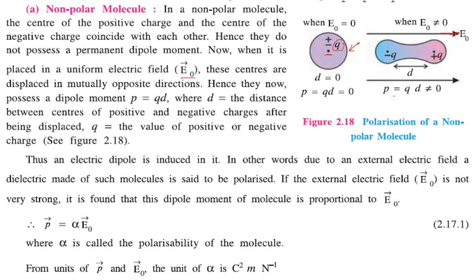When subjected to electric field E₀, the centers are displaced in mutually opposite directions. Now they have a dipole moment P, which is equal to Q times the distance of separation D between them. So dipole moment P = Q × D, where Q is the charge and D is the distance. An electric dipole is thus induced by the electric field, and the dielectric made of these molecules is now being polarized.